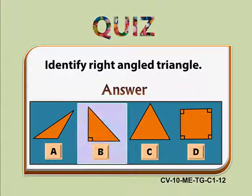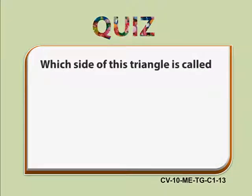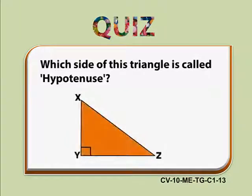The answer is Option B is a right angle triangle. Second question. Which side of this triangle is called Hypotenuse?